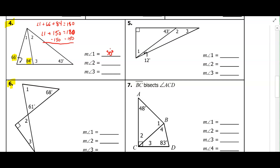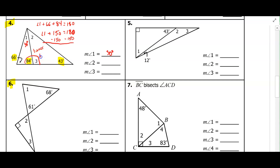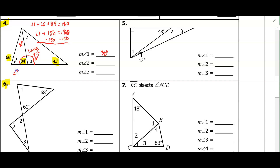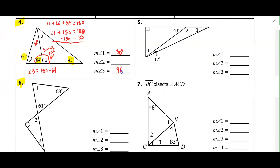Once I find an angle, I put it in the picture so I have a visual of what I have. In the other triangle I only know the 43-degree angle. But I can see that angle three and the 84-degree angle form a linear pair — linear pairs are supplementary and add up to 180. So angle three equals 180 minus 84, which gives me 96 degrees.